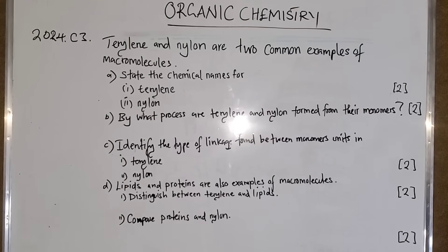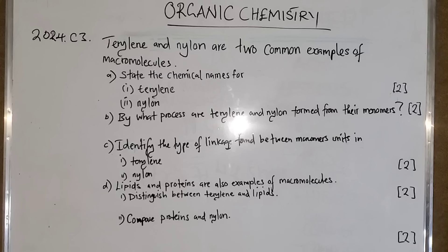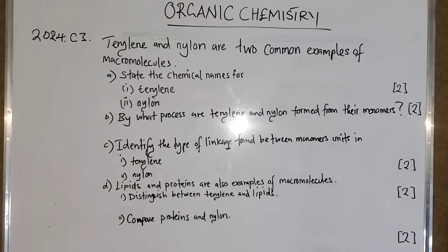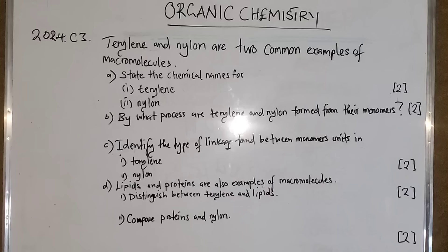Organic chemistry question 3 of section C. The question states that terylene and nylon are two common examples of macromolecules. Macromolecules are giant molecules which are formed by combining two or more monomers. The first part asks for the chemical names for terylene and nylon.